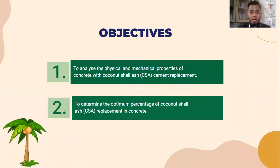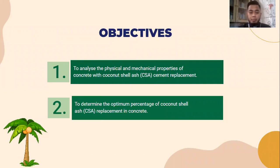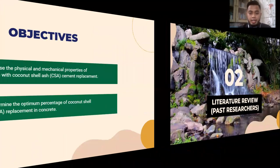My objective is to analyze the physical and mechanical properties of concrete with coconut shell ash as partial replacement. The second objective is to determine the optimum percentage of coconut shell ash replacement in concrete.